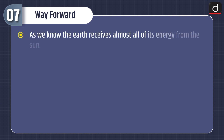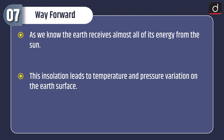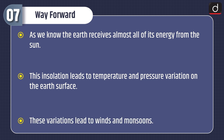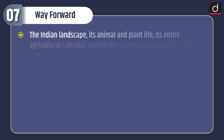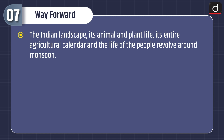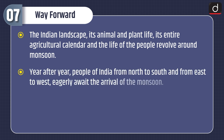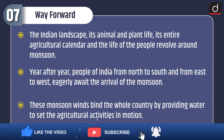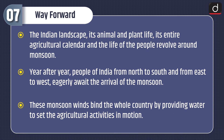Now lastly let's discuss about the way forward. As we know, the earth receives almost all of its energy from the sun. This insolation leads to temperature and pressure variation on the earth's surface. These variations lead to winds and monsoons. The Indian landscape, its animal and plant life, its entire agricultural calendar and the life of the people revolve around monsoon. Year after year, people of India from north to south and from east to west eagerly await the arrival of the monsoon. These monsoon winds bind the whole country by providing water to set the agricultural activities in motion.